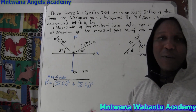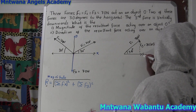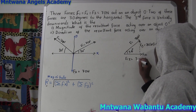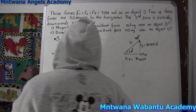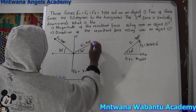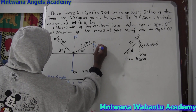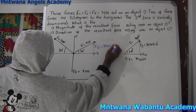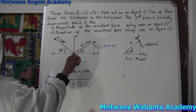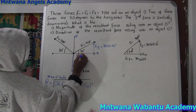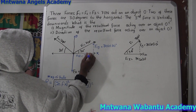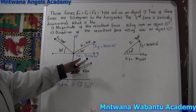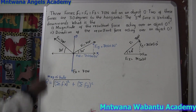For the horizontal component, we always use cosine. So F1x = 70 × cos(30°). That's the horizontal component of F1, pointing in the positive x direction.